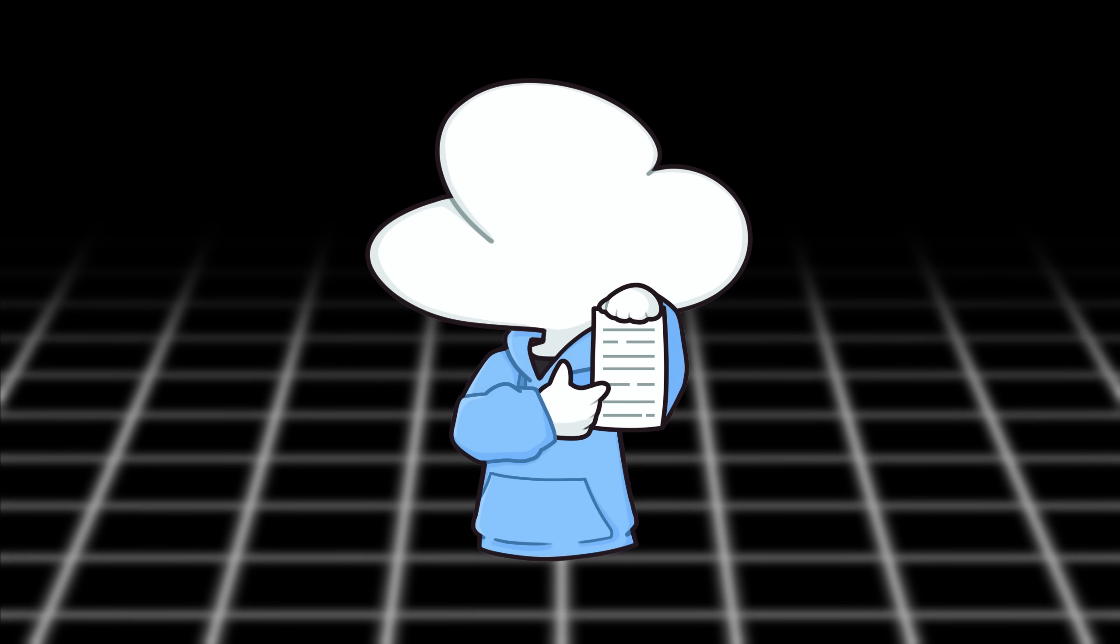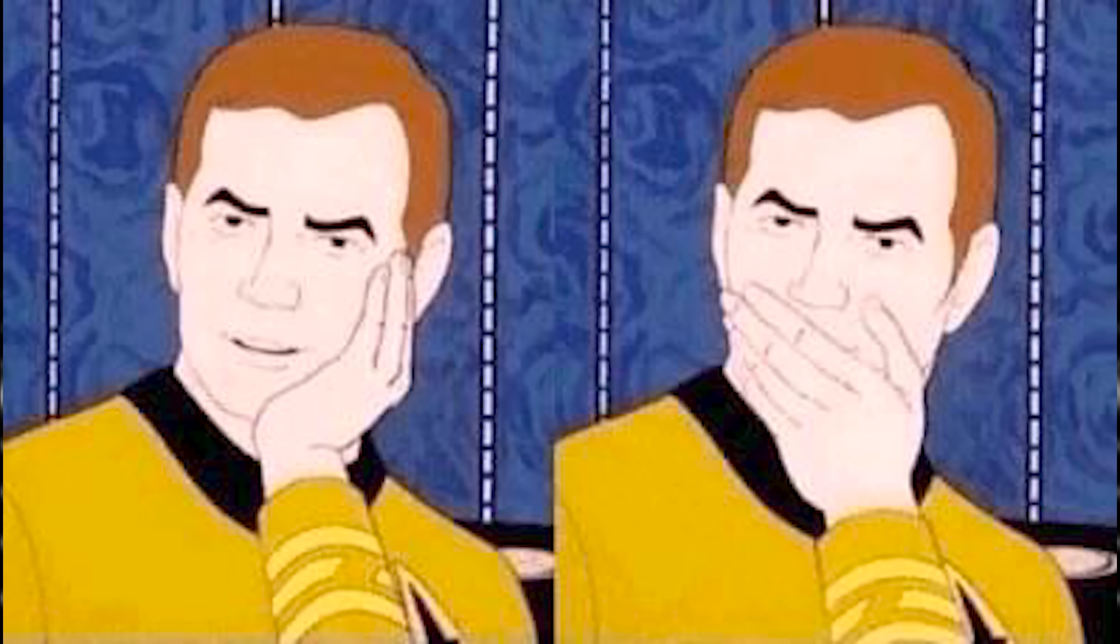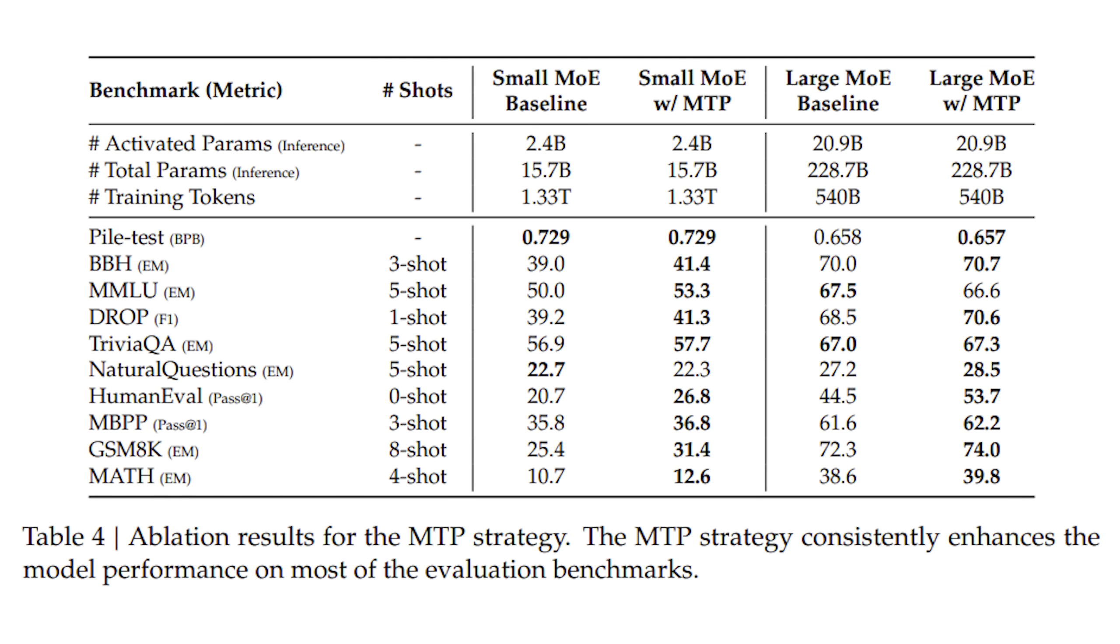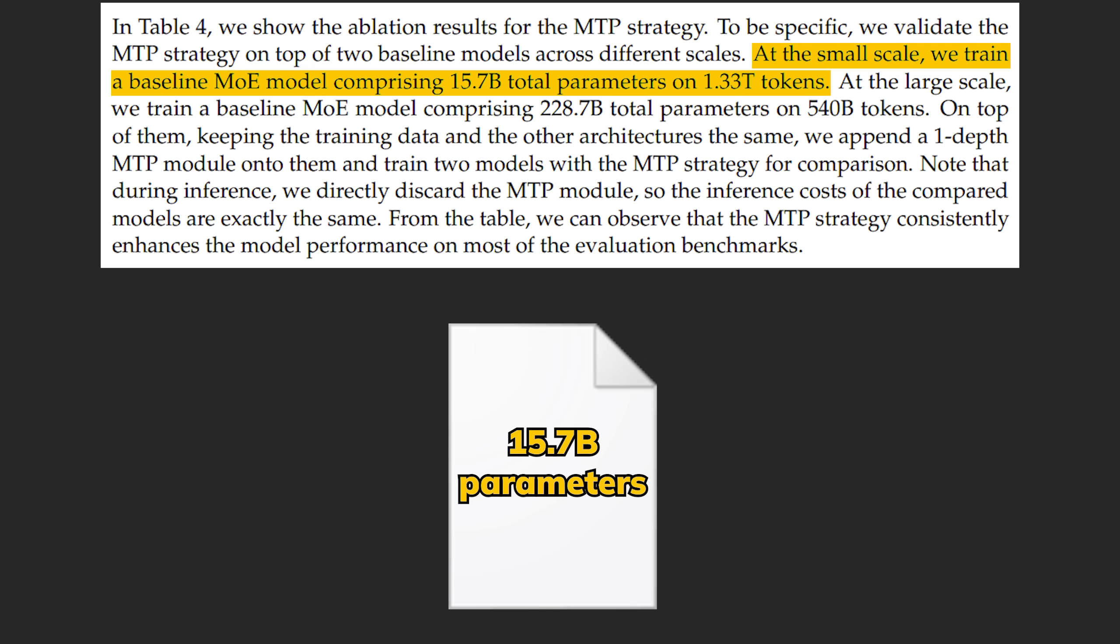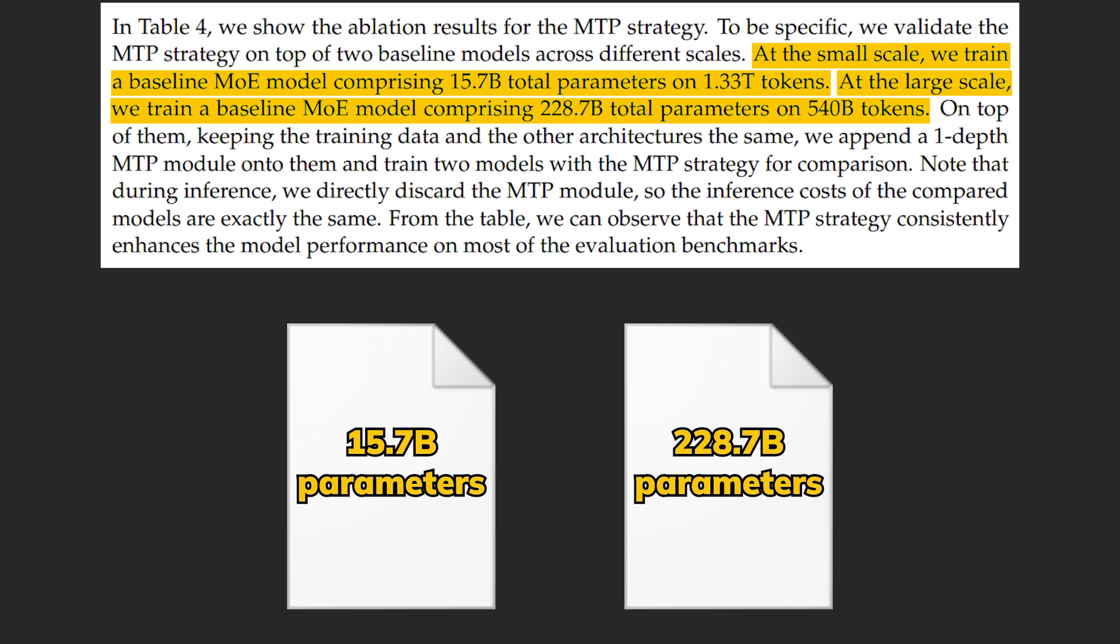But did that work, and does it actually make a difference? Surprisingly, but not surprisingly, DeepSeek validated this method very rigorously in their ablation studies. They have a smaller 15.7 billion parameter and a larger 228.7 billion parameter model using only standard next token prediction as a baseline, and compared to the same two models again, but trained with one MTP objective which was then discarded after.